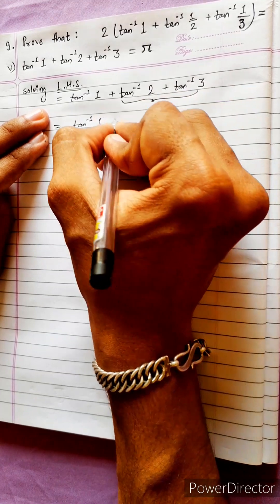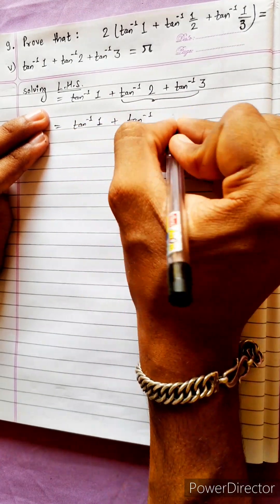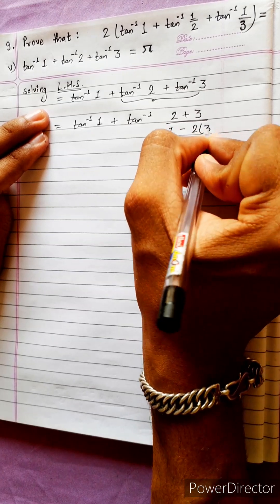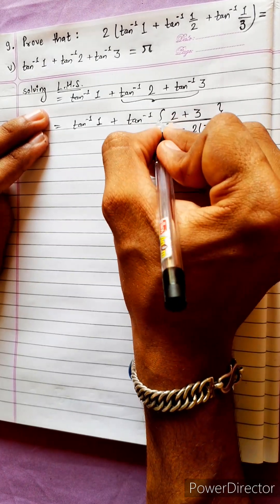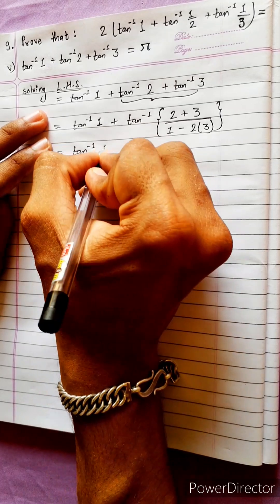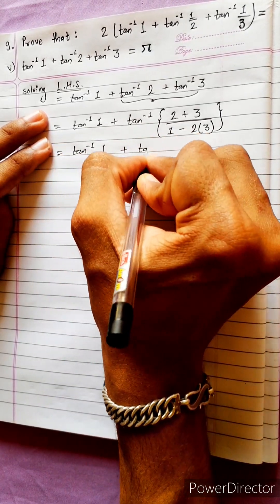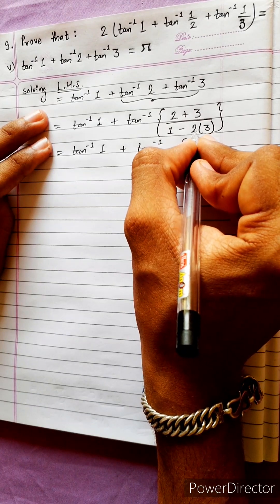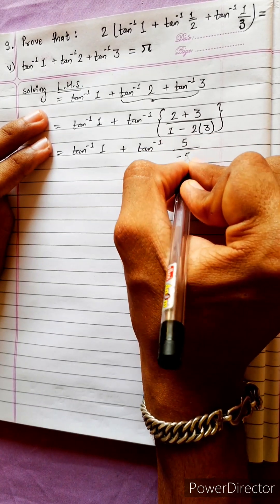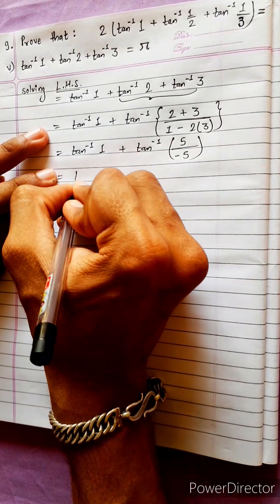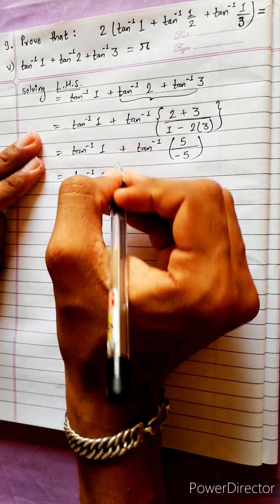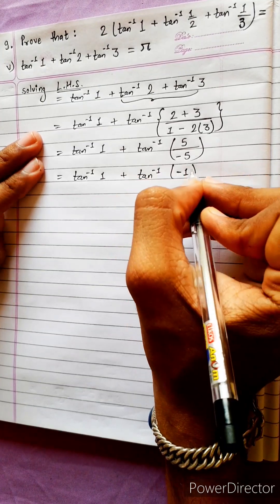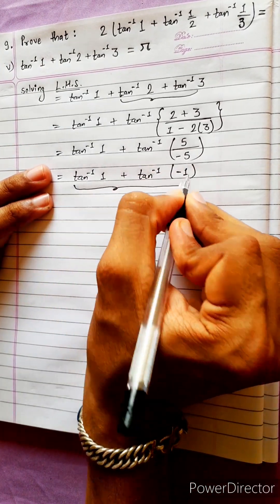The formula is tan⁻¹((a+b)/(1-ab)). Applying this: tan⁻¹(1) + tan⁻¹(5/3), where 1 minus 6 equals minus 5. Now this becomes tan⁻¹(1) + tan⁻¹(−1). Again applying the formula between these two.